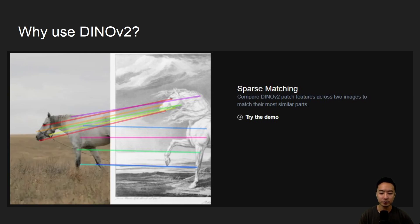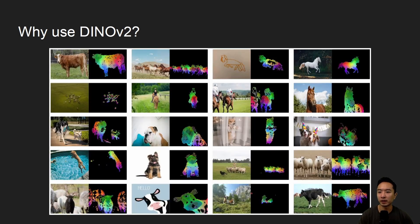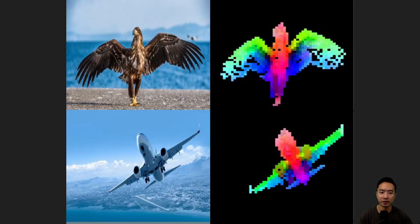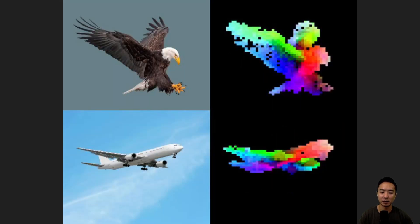Sparse matching looks at not each individual pixel but just parts of the image. Here are some examples of extracting features from various types of images — horses, dogs, and other animals. You can also do feature matching among very unrelated things: a train and a truck, a bus and a truck, or an elephant and a statue of an elephant. Things that are very similar yet have very different viewpoints can still be matched, which would be great for instance retrieval.